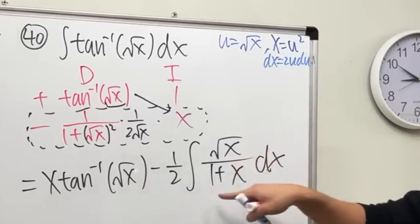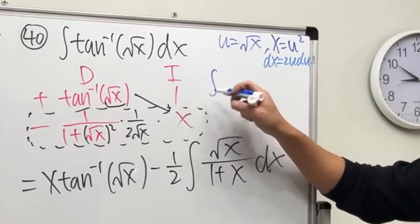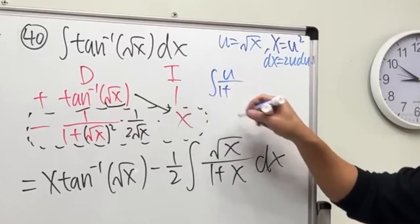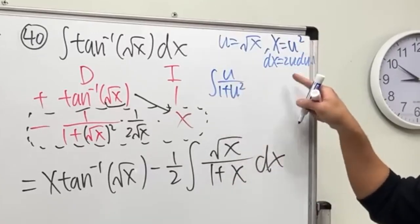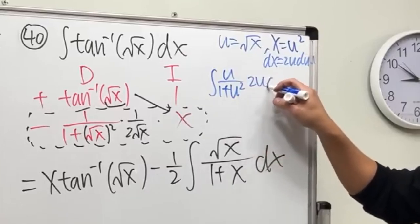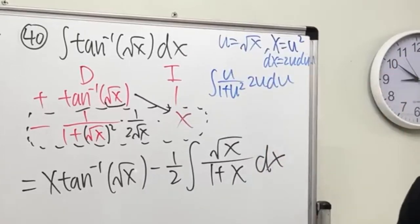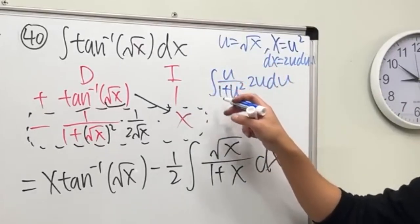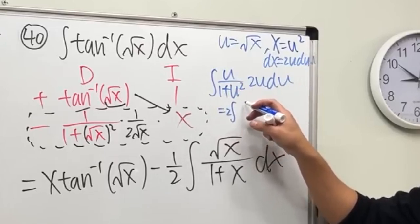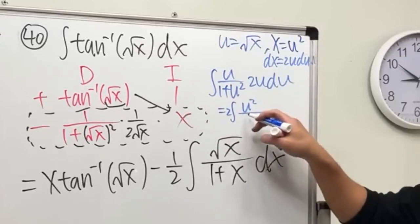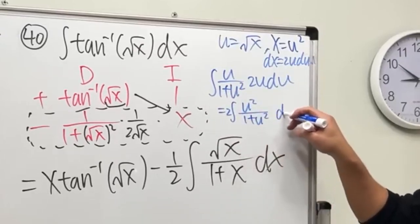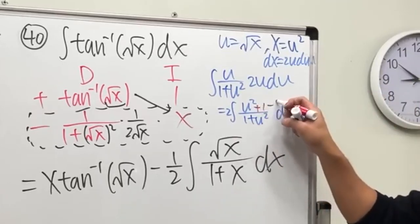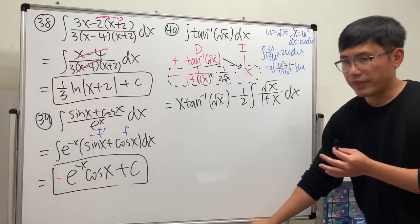All right, so this integral wise, we get the integral. On the top is u over one plus x, which is u squared, and then we get 2u du. Yeah, so the two can be coming to the front, and then we have u squared. So this right here is the same as integral u squared over one plus u squared in the u world. And then do the usual business, we add one minus one. I think that should be enough work for us to see.